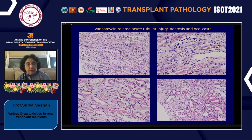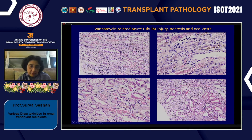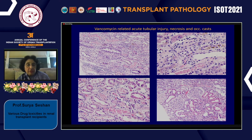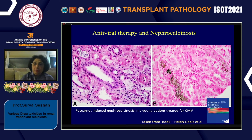Vancomycin-related tubular injury, necrosis, and cast nephropathy are responsible for severe tubular injury and sometimes patchy interstitial nephritis. Reversibility may not be complete depending on the severity of tubular injury and necrosis. Antiviral therapies can also cause tubular necrosis and nephrocalcinosis; for example, foscarnet — used for parasitic and severe fungal infections — caused nephrocalcinosis as documented in Dr. Liapis's book.